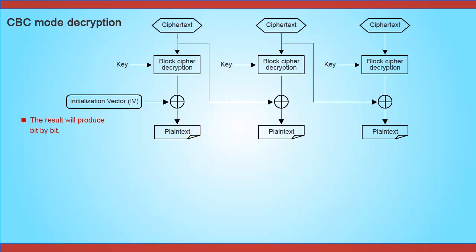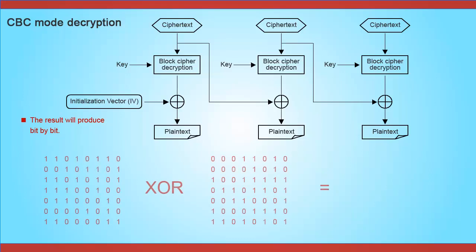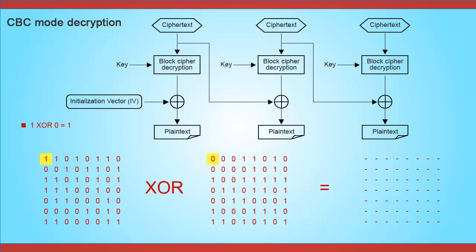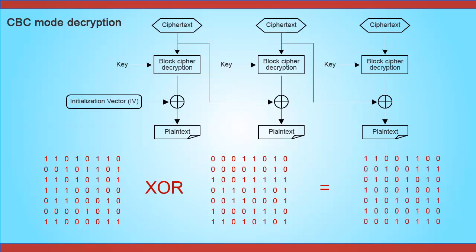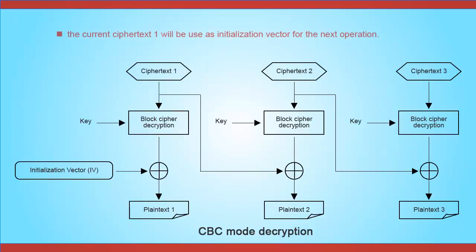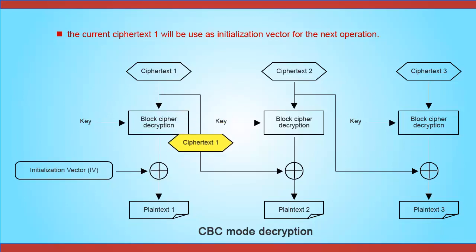The result is produced bit by bit. For example, the first bit of the result will be 1, the second bit will be 1, and the third bit will be 0. The operation continues for all remaining bits. Once all the remaining bits are done, the first plaintext is decrypted. The current ciphertext 1 will be used as the initialization vector for the next operation.